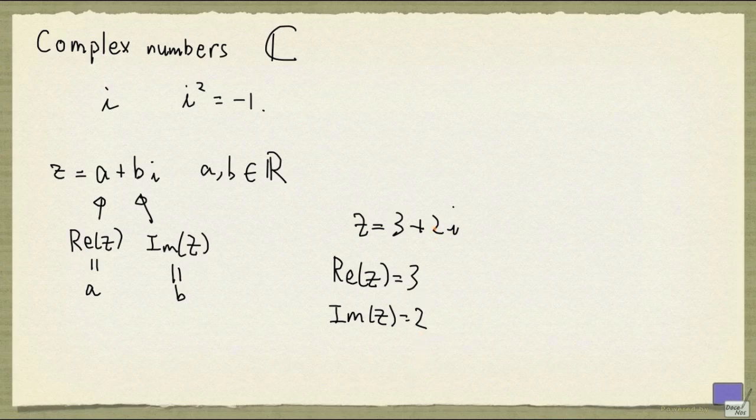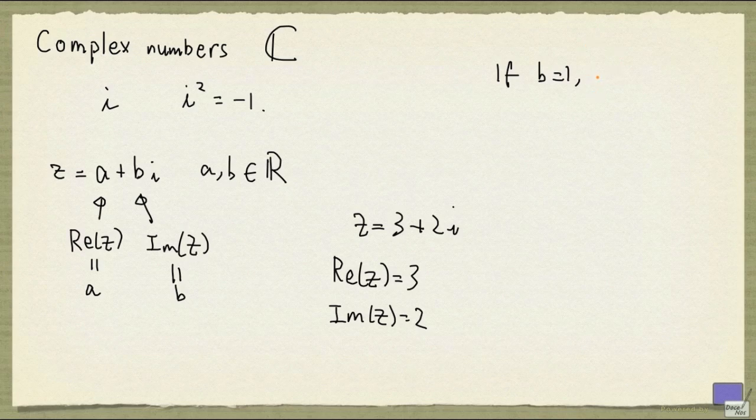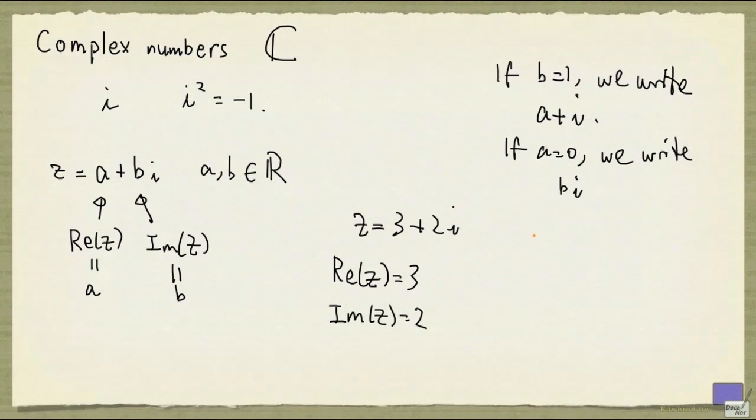Now for convenience, if b is 1, we simply write a plus i, and if a is 0, we simply write bi, and if a is 0 and b is 1, we simply get back the imaginary number i.